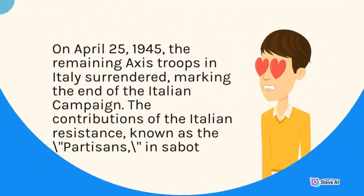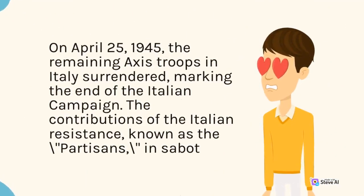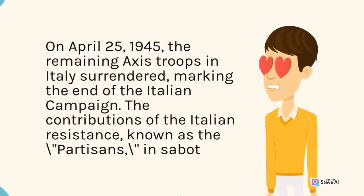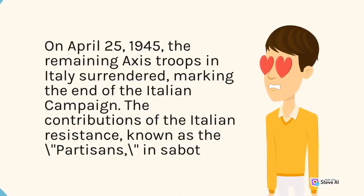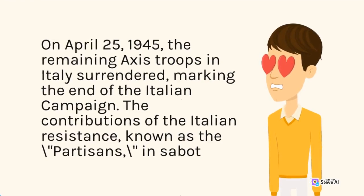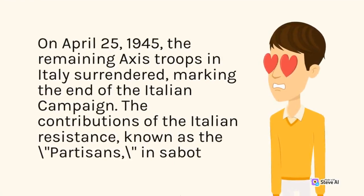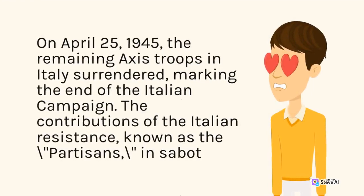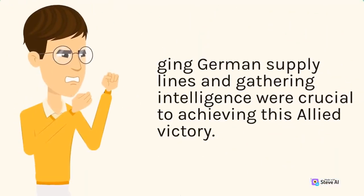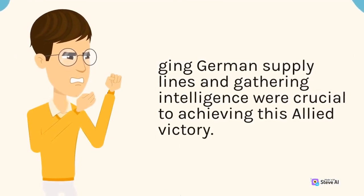On April 25, 1945, the remaining Axis troops in Italy surrendered, marking the end of the Italian campaign. The contributions of the Italian resistance, known as the Partisans, in sabotaging German supply lines and gathering intelligence were crucial to achieving this Allied victory.